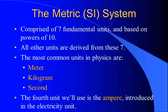The metric system is all based on powers of ten, and all other units are derived from the basic seven fundamental units. The ones we're going to use most often are the meter, which we abbreviate as M to measure length, the kilogram, kg, to measure mass — how much stuff something's made up of — and the second to measure time. The fourth unit, which we won't get into until we start talking about electricity, is a unit for current, known as the ampere.